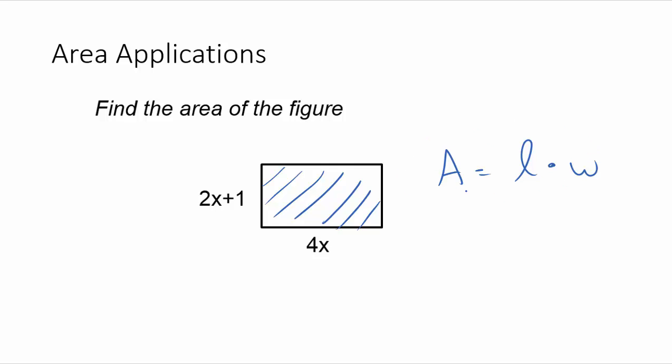It's always important to write that formula down whenever you see that you're dealing with an area problem and you have a rectangle. And then let's just fill in what the length and the width are. So in this case, we have a length of 4x and a width of 2x plus 1.